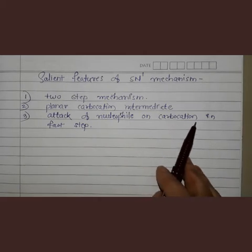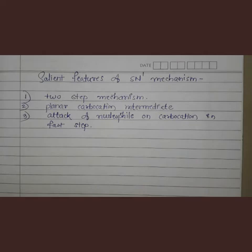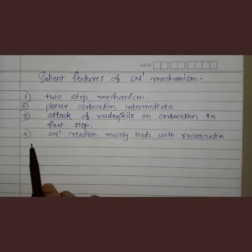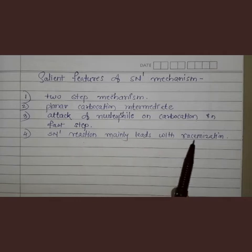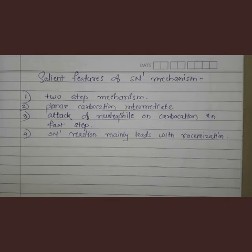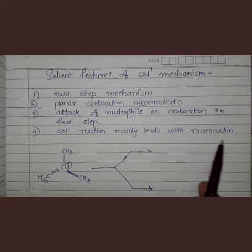The third feature is the attack of the nucleophile on the carbocation intermediate. The second step is fast: the nucleophile attacks the carbocation and gives us the final product. The fourth feature is that the SN1 reaction mainly leads to racemization. Racemization, which we studied in optical isomerism, refers to the formation of a racemic mixture of dextrorotatory and levorotatory substances.